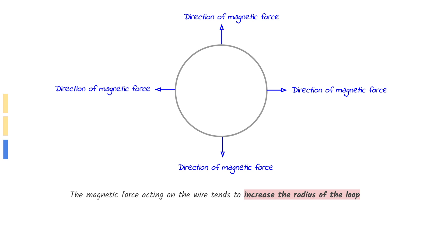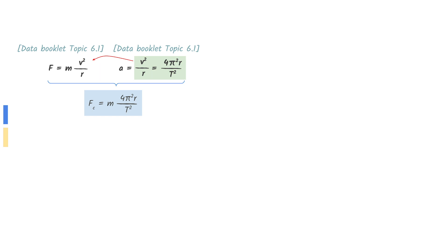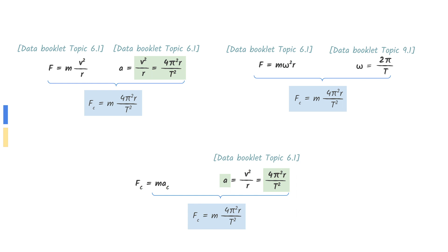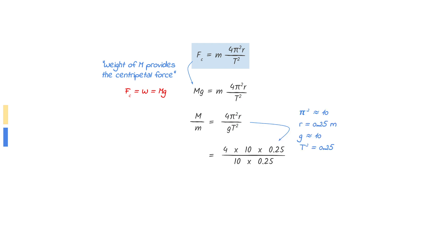This will increase the radius of the loop. First, let us derive an equation for centripetal force with period in the equation. Substitute v squared over r from the centripetal acceleration equation into the equation for centripetal force, or put those two equations together, or use F equals ma with centripetal acceleration. The question tells us that the weight of the hanging mass provides the centripetal force, so centripetal force equals large M times g. Rearrange the equation to make large M divided by small m the subject. Pi squared is roughly 10, r is 0.25 meters, g is also roughly 10, and T squared is 0.25. Cancel the numbers to find your answer.